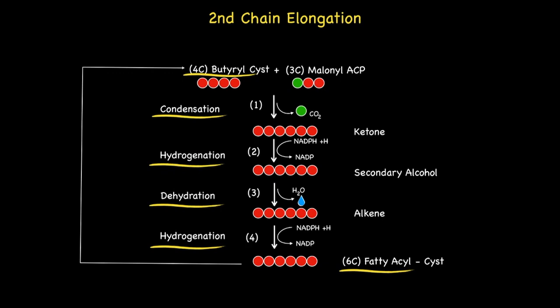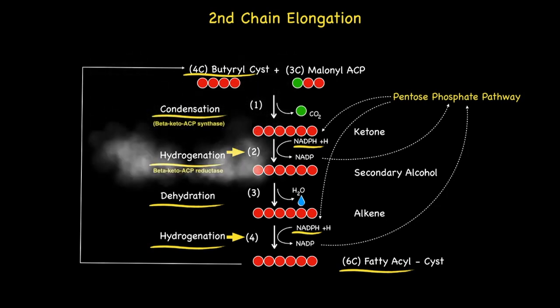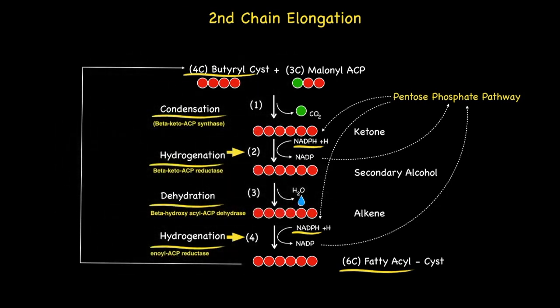Reduction reactions occur at steps two and four in the presence of NADPH. You also need to know how NADPH is regenerated in the cytosol to allow lipogenesis to continue. The simple answer is the pentose phosphate pathway. Also, for those of you who are keen, here are the enzymes that are required for each of these four steps.